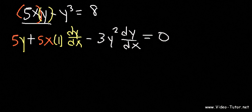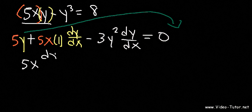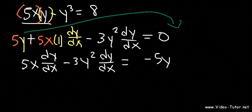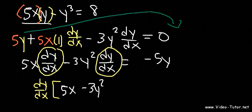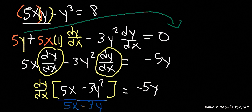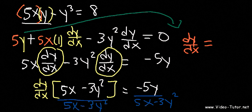Any term that doesn't have a dy/dx, let's move it to the other side — that's the 5y. So now we have 5x dy/dx minus 3y squared dy/dx equals negative 5y. Whenever you move a term from one side to another, it changes sign. Our next step is to factor out dy/dx: dy/dx times (5x minus 3y squared) equals negative 5y. So dy/dx equals negative 5y over (5x minus 3y squared).